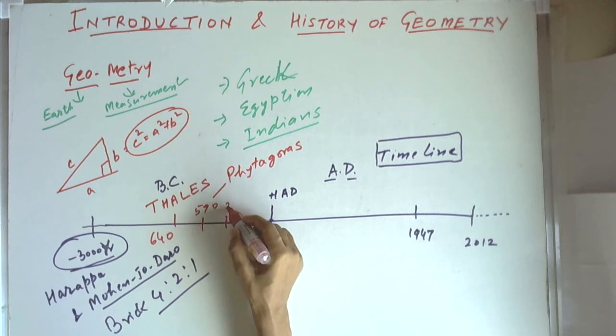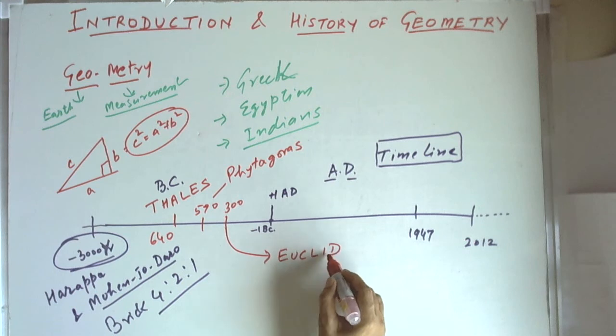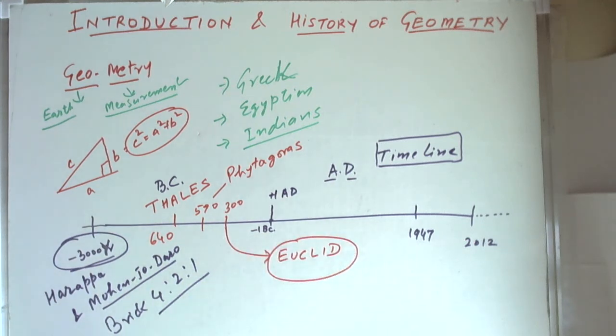Then in year 300 BC there was a Greek mathematician named Euclid. Now Euclid did documentation of various geometrical formulas and principles.